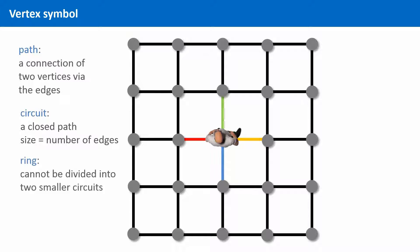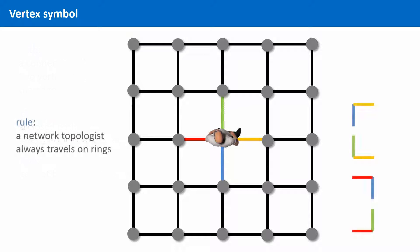Now, the network topologist plans his trip very efficiently and only wants to walk very short distances. But he also has another rule he must follow. And the rule is? Network topologists only travel on rings when they do their walk around a vertex. OK, let him start with his walk.